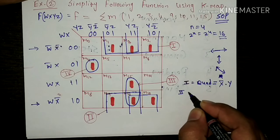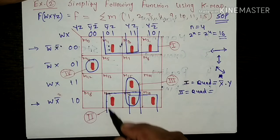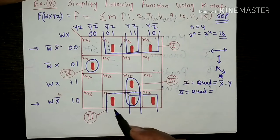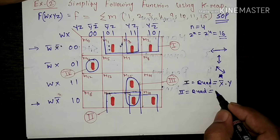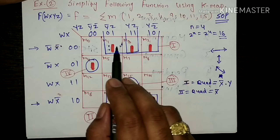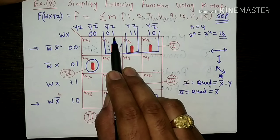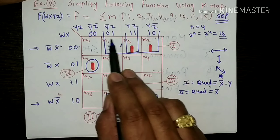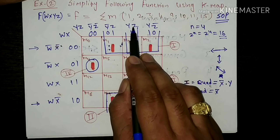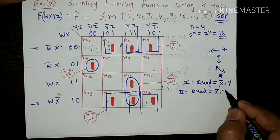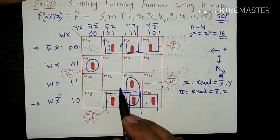Now let us take the second group, which is again a quad. इस group में भी first and last rows आते हैं जिसमें X̄ common है, और इसमें second and third columns आते हैं, इन दोनों में common है Z. So यहाँ पर आएगा Z. So X̄·Z is the minimized term for the second group, that is a quad.